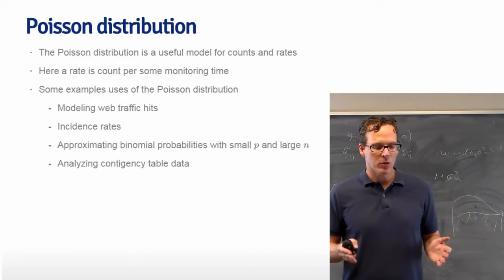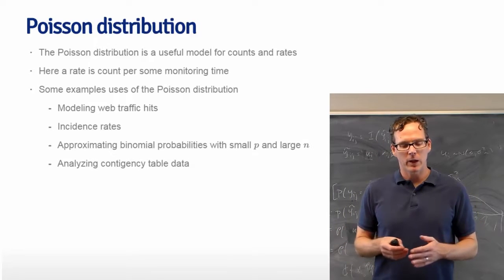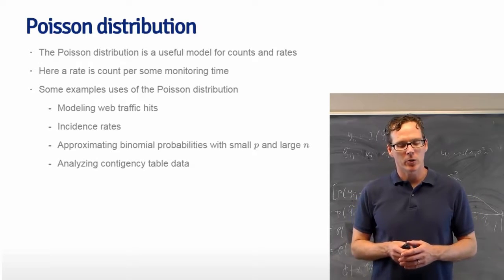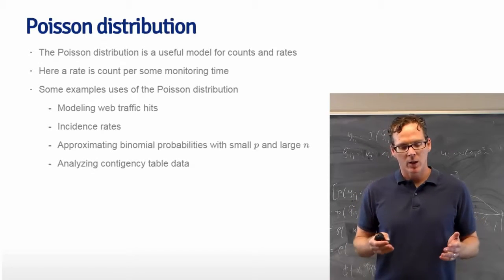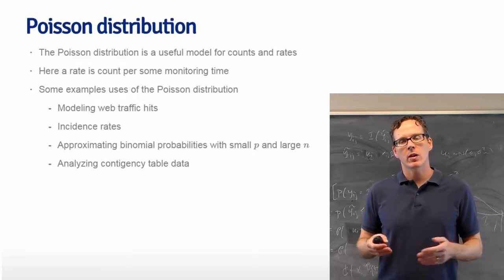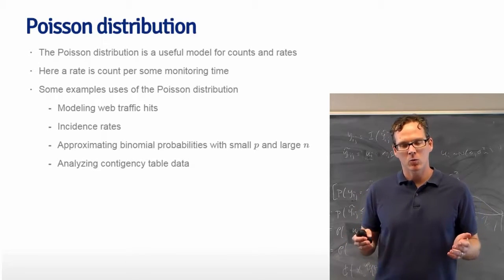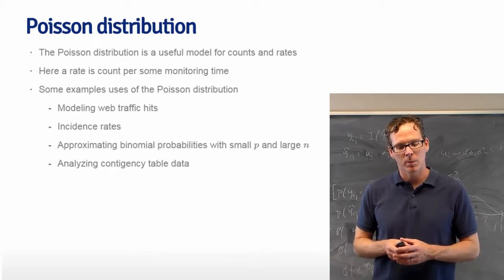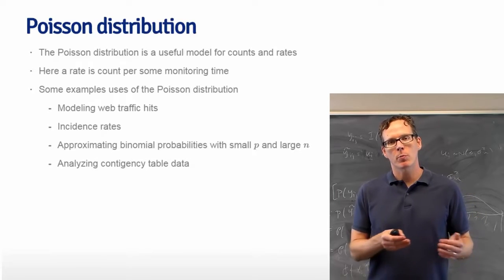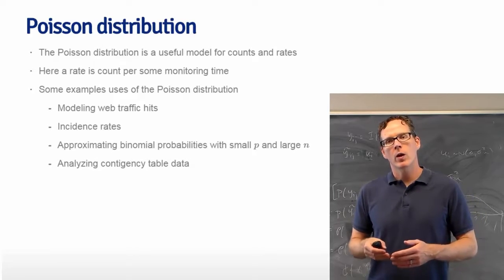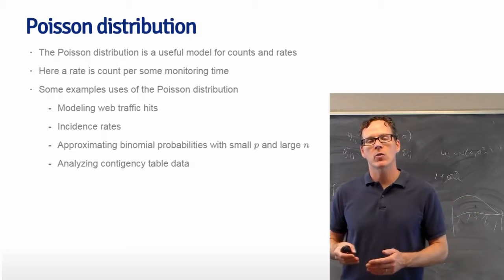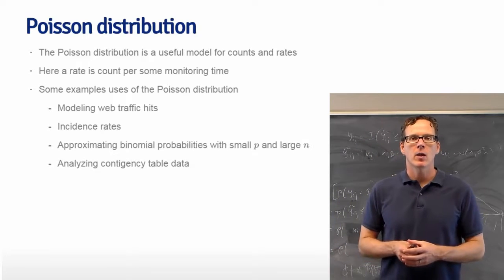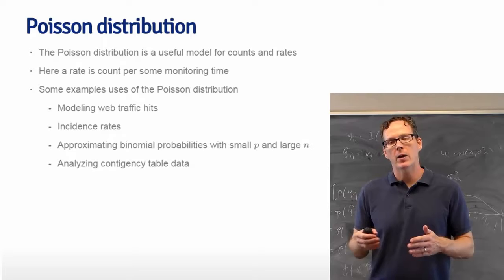The Poisson distribution is a useful model for counts and rates. A rate is a count per some monitoring time. Often incidence rates and web traffic and all these other things are modeled by Poisson distributions. A very common use of the Poisson distribution is approximating binomial probabilities where the success probability is very small and the n is very large. You can think of that as an instance that's sort of approximated in an unbounded count even though the actual count is bounded.